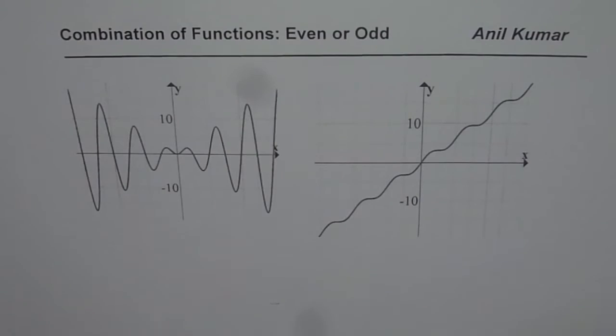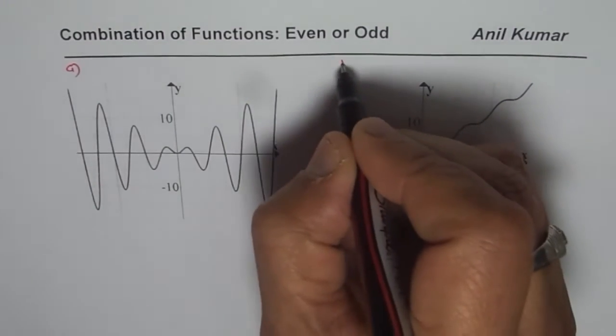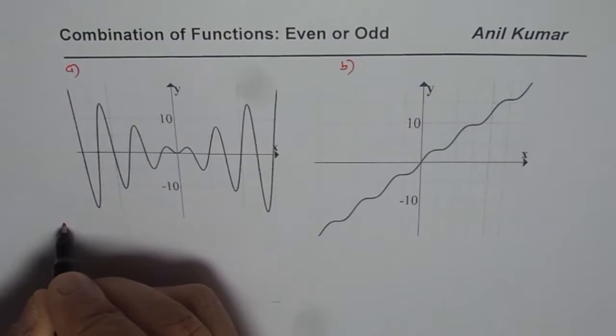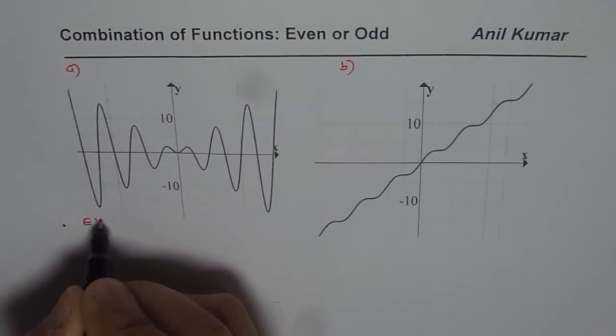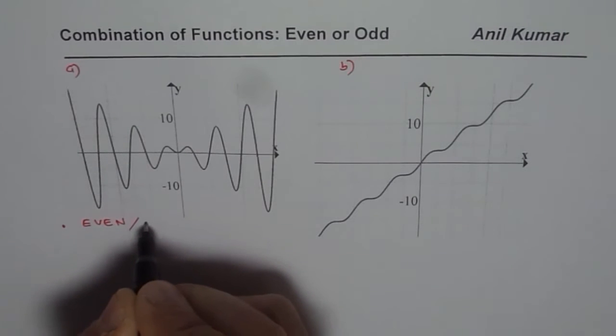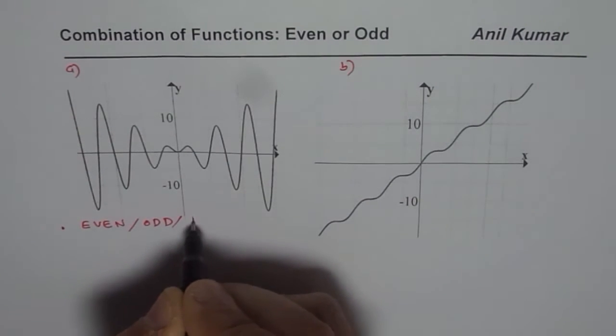So I hope you understand the question. We have two graphs A and B here. Question number one is find whether they are even, odd or neither.